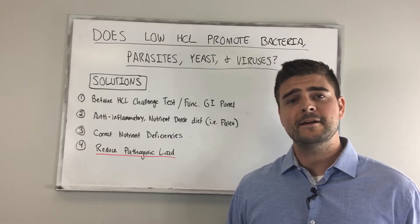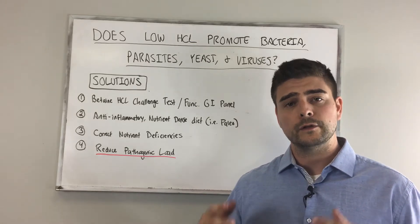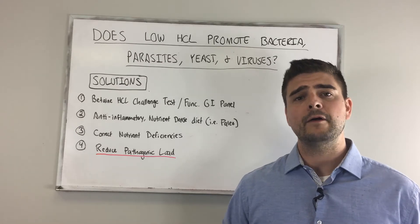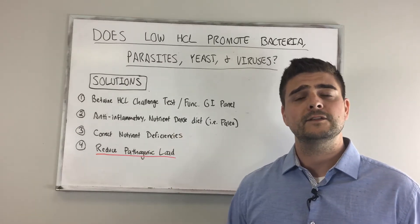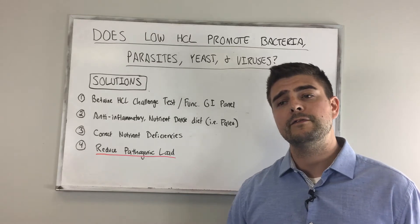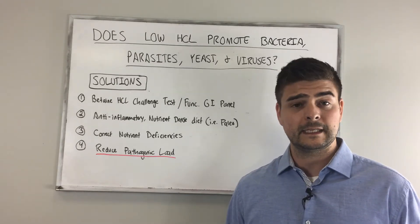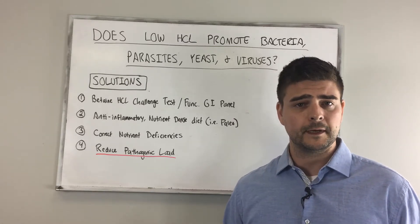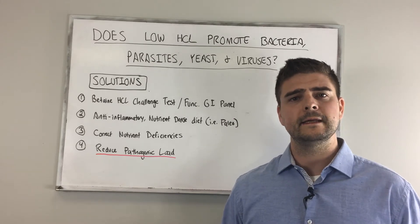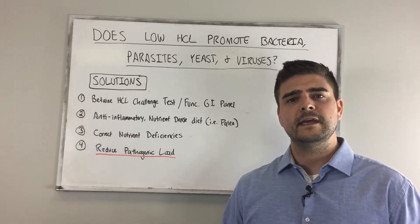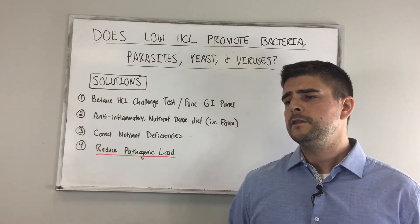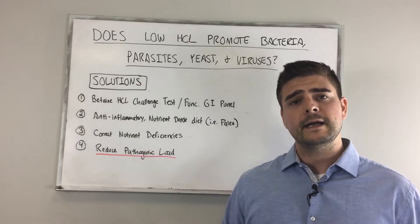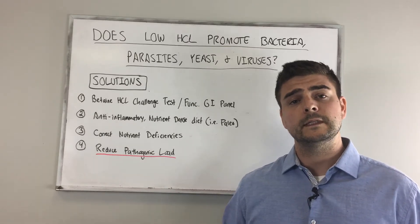The last solution I'm going to tell you about has to do with reducing your pathogen load — really, really important. You want to make sure if you have any bugs in there that you're clearing them out. Get a functional GI panel like the 401H from BioHealth, work with a practitioner who can access that type of testing and who actually knows how to clear out these bugs. You can't just throw antimicrobials and herbs at it. There are specific phases and steps that you have to take to safely and effectively do this.